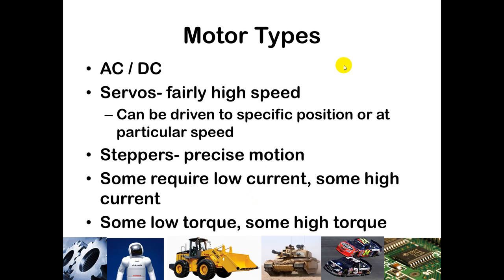There are a lot of different motor types and it's important to understand the benefits of each. As an electrical engineer, you may be responsible for choosing different motors. First, you need to choose whether you want an AC or DC motor, which depends upon your application. AC motors are typically used in applications where something is fixed, such as plugged into a wall. DC motors are often used in portable systems, such as mobile robotics or anything that moves around and needs to attach to a battery.